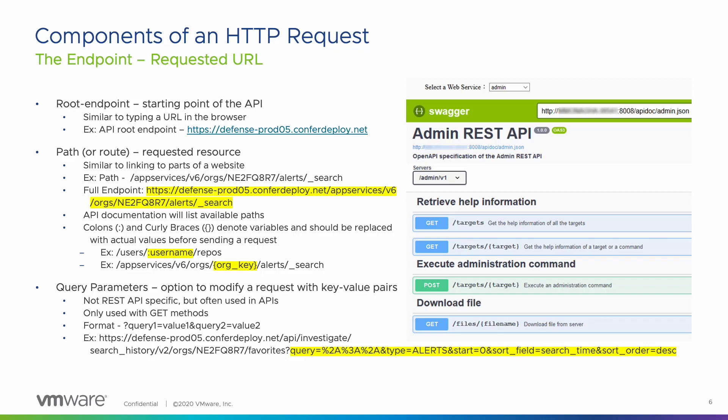The root endpoint is the starting point of the API. Its format is similar to what you would type in your browser's address bar. The path, sometimes referred to as the route, determines the resource you are requesting. Think of it like an automatic answering machine that asks you to press 1 for a service, press 2 for another service, and so on. For example, if you want to perform an alert search in the Carbon Black Cloud console, you would navigate to Alerts and type in the search bar. To call the Alerts API, you would use this endpoint, which consists of the root endpoint and the path to access the Alerts search functionality.